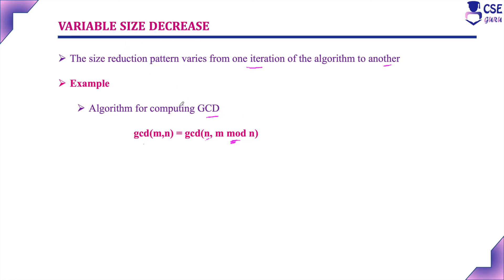Now we have discussed the introduction to decrease and conquer technique and its three variants: decrease by a constant value, decrease by a constant factor, and variable size decrease. From the next session onwards, we will enter into problems solved under decrease and conquer technique — specifically insertion sort, graph traversals including depth first search and breadth first search, and topological sorting. These will be solved with examples using the decrease and conquer technique. Thank you for watching this video.